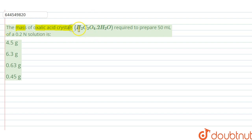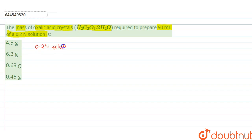Hello students. The question is: the mass of oxalic acid crystals H₂C₂O₄·2H₂O required to prepare 50 ml of a 0.2 normal solution. The options are: 4.5 gram, 6.3 gram, 0.63 gram, and 0.45 gram. In the question we have to prepare a 0.2 normal solution of oxalic acid crystals and the volume of this solution is 50 ml.